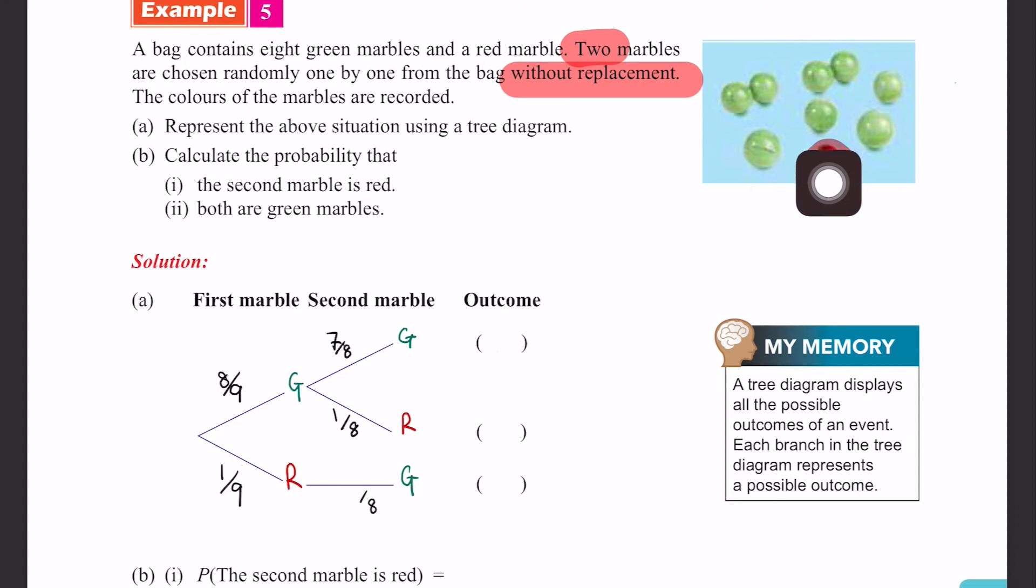Only green is left. So how many green can I choose? So 1, 2, 3, 4, 5, 6, 7, 8. So there are 8 green.